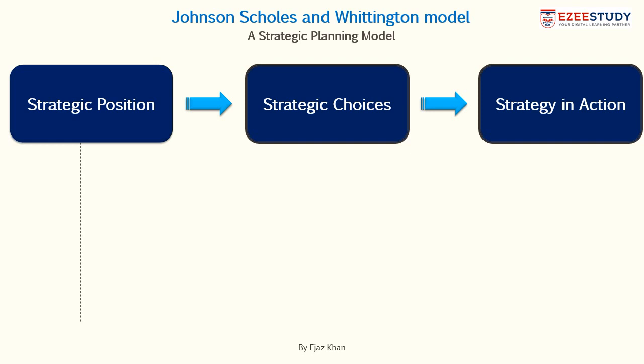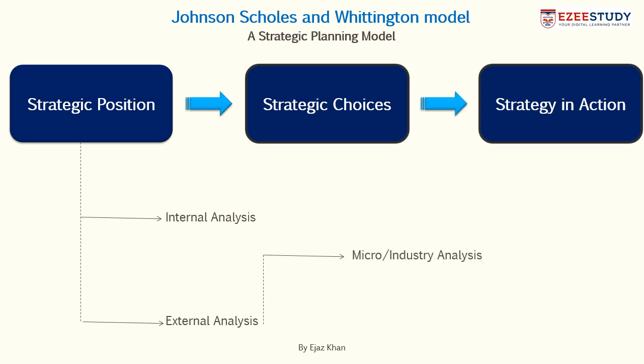When we talk about analyzing the strategic position of the company, we mean the internal analysis and the external analysis. Internal analysis means looking at the organization from inside and looking at its strengths and weaknesses — the things that it does better than its competitors or the things that it does worse than its competitors. And when we say external analysis, we mean micro or industry analysis, that is the market analysis in which the company is operating in, and the macro level analysis, that is the economic conditions that it is confronted with.